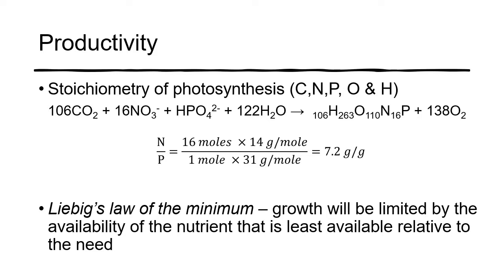When looking at the trophic system of a water body, we're essentially looking at the primary productivity in that system. The stoichiometry of photosynthesis is dependent on carbon, nitrogen, phosphorus, oxygen, and hydrogen. The ratio of nitrogen to phosphorus is about 7 to 1 on a mass basis, so typically more nitrogen is needed than phosphorus. Liebig's law of the minimum states that growth will be limited by the nutrient that is least available relative to need, and typically in many aquatic systems it's either nitrogen or phosphorus that is the limiting nutrient.